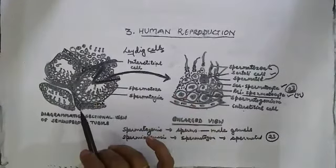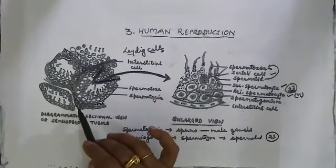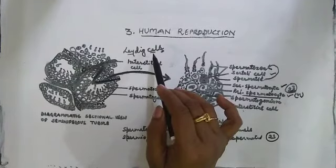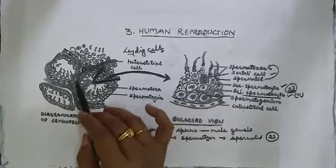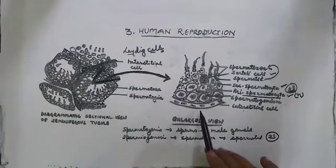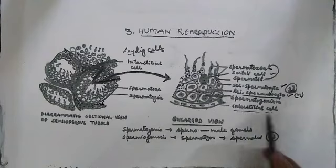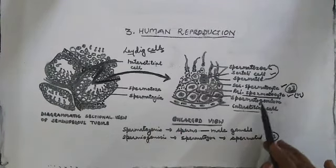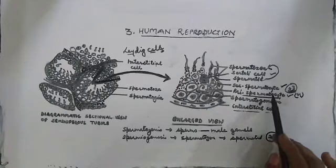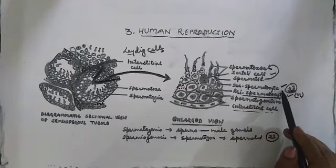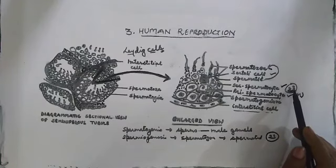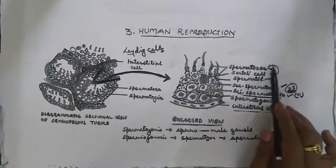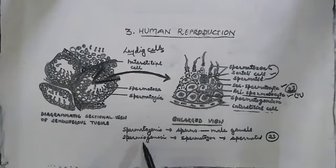To recap: this is the seminiferous tubule, lined with interstitial spaces. These spaces contain interstitial cells, also called Leydig cells after the anatomist, as well as blood vessels. The spermatogonia, termed primary spermatocytes, differentiate after meiosis I to give rise to secondary spermatocytes having chromosome number 23. The secondary spermatocytes differentiate into spermatids, which transform into spermatozoa — a process known as spermiogenesis.